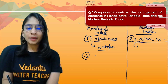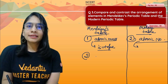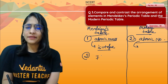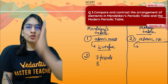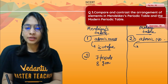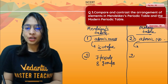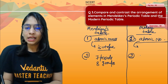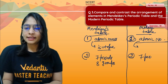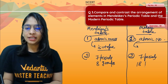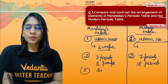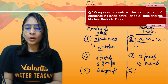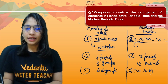In Mendeleev's table, NCRT says there were six periods (some books say seven), with seven horizontal rows and eight groups. In the modern periodic table, there are seven periods and 18 groups — 18 vertical columns. Mendeleev's table also had subgroups within groups, whereas the modern periodic table has no subgroups.